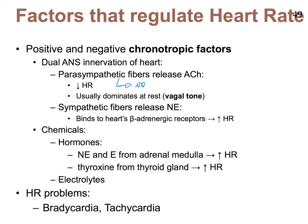The parasympathetic fibers are present in the vagus nerves — there are two — that innervate the heart. On the other hand, sympathetic fibers release norepinephrine, and they can bind to receptors on the heart that specialize in the binding of norepinephrine. More specifically, these are beta-adrenergic receptors.